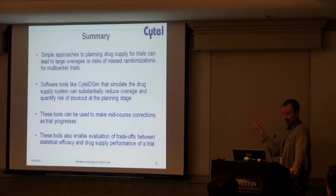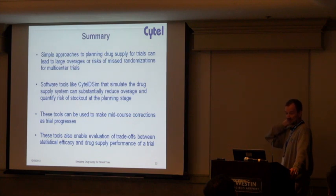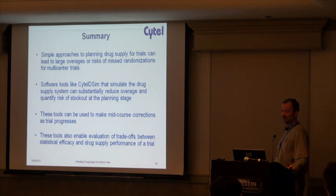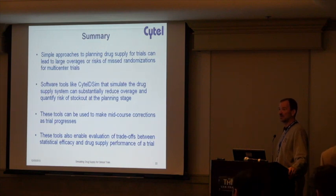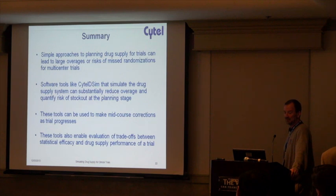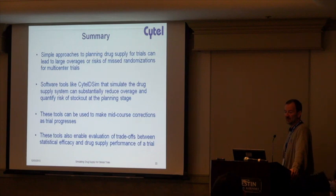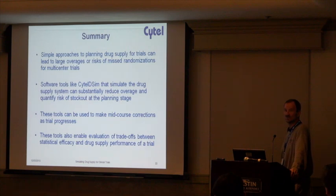With this set of examples, we showed how drug supply without simulation can lead to large overages and still risk some missed randomizations. But with the software, you can develop strategies for drug supply to eliminate stockouts. The tools can be used to make mid-course corrections as the trial progresses — to optimize the number of sites you open, close sites, and evaluate the trade-offs between the various factors that influence how you provide drug supply to clinical trial sites.